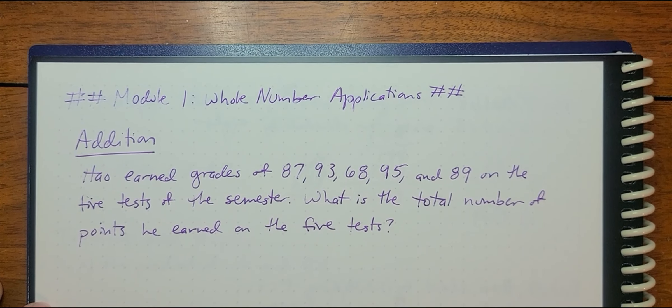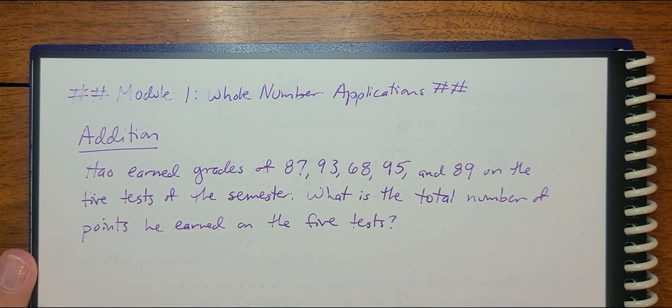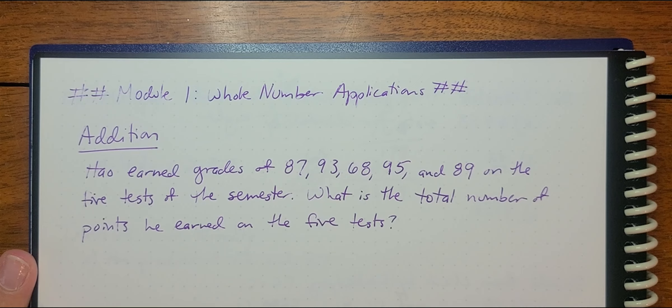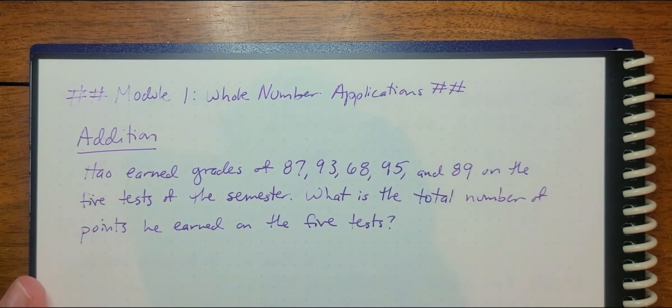So our first addition problem is that Howe earned grades of 87, 93, 68, 95, and 89 on the five tests of the semester. What is the total number of points he earned on the five tests? Well, you might have already guessed from the fact that we're doing addition that we're just going to add up these values.